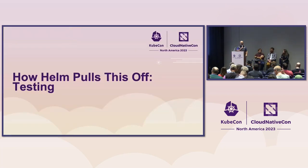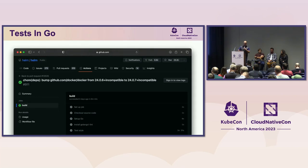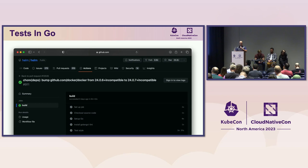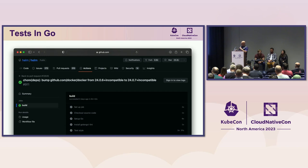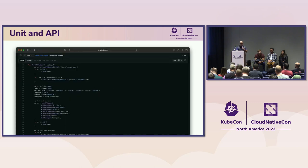Let's talk about testing — how we pull off this testing thing in keeping Helm stable, reliable, and all of those things. Testing is at the core of what we do. We've got a lot of tests written in Go. It used to be run in CircleCI; today it's run in GitHub Actions. We've even got automation that kicks off dependency updates automatically to keep dependencies current and knock out CVEs in the dependency tree.